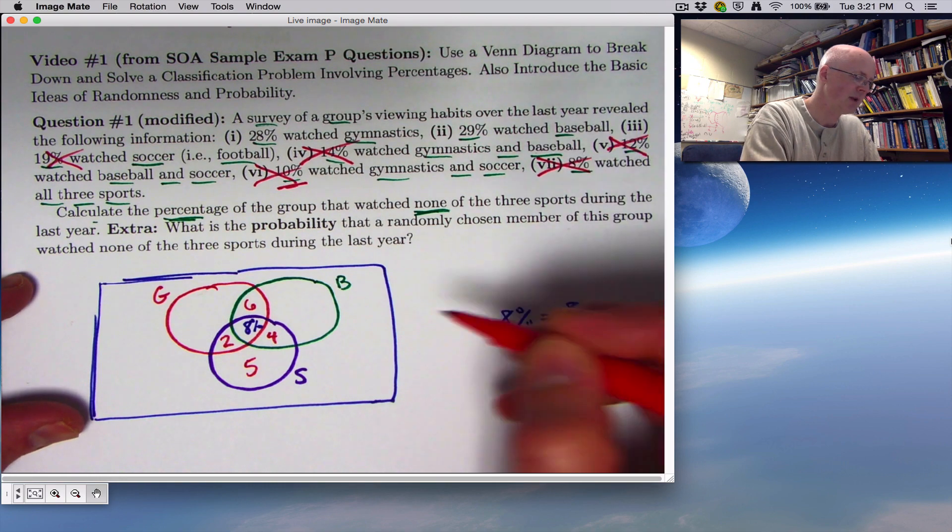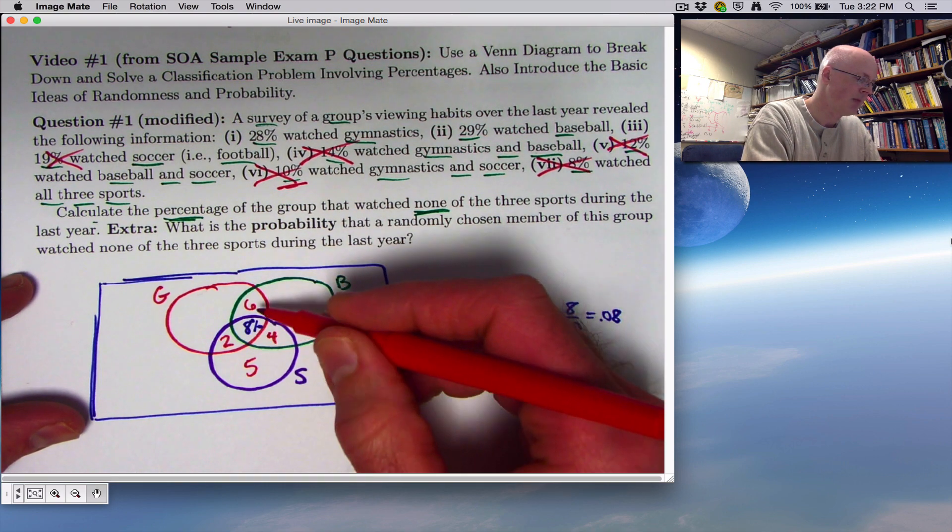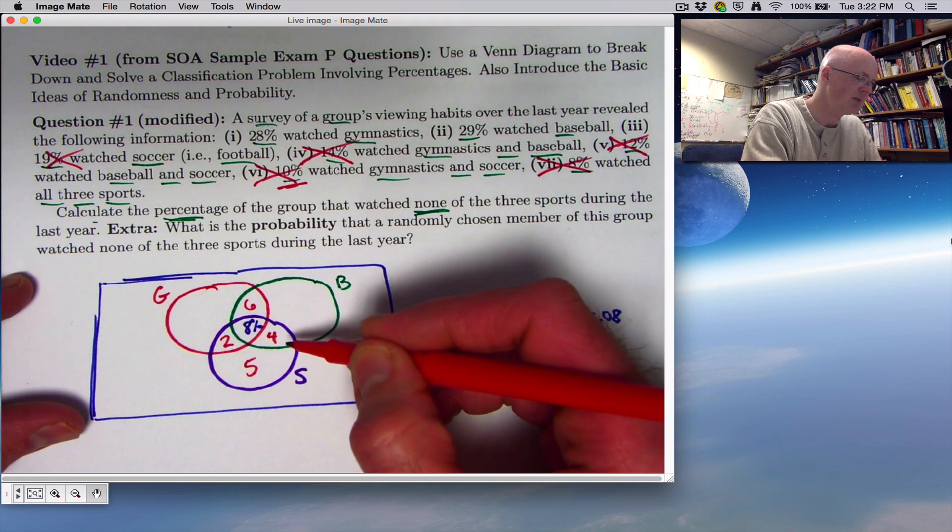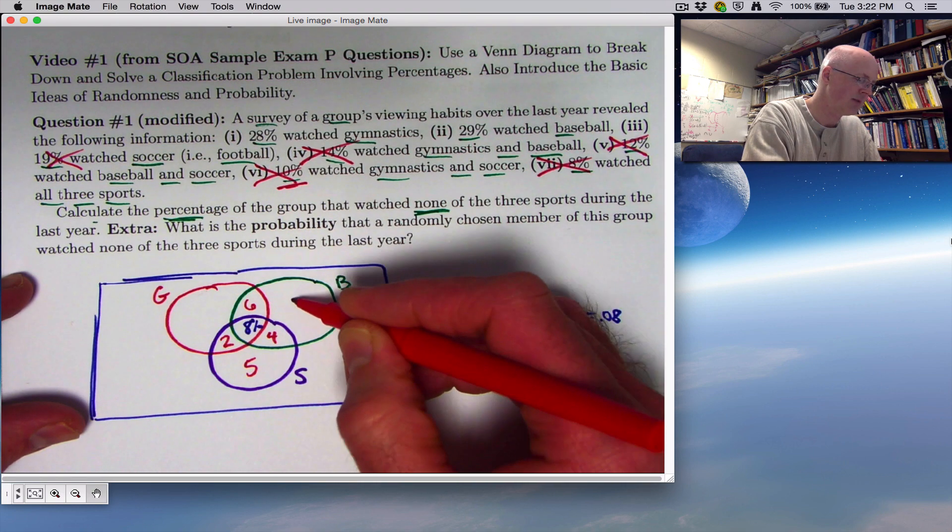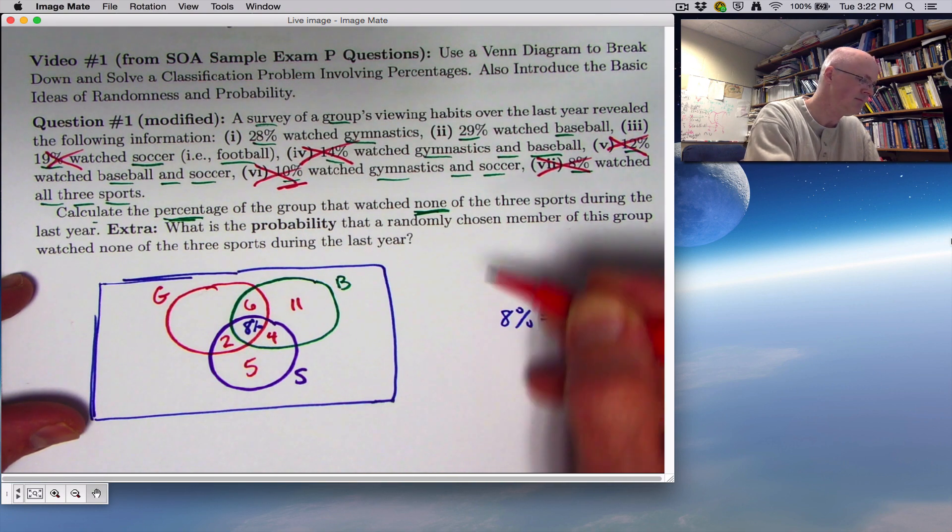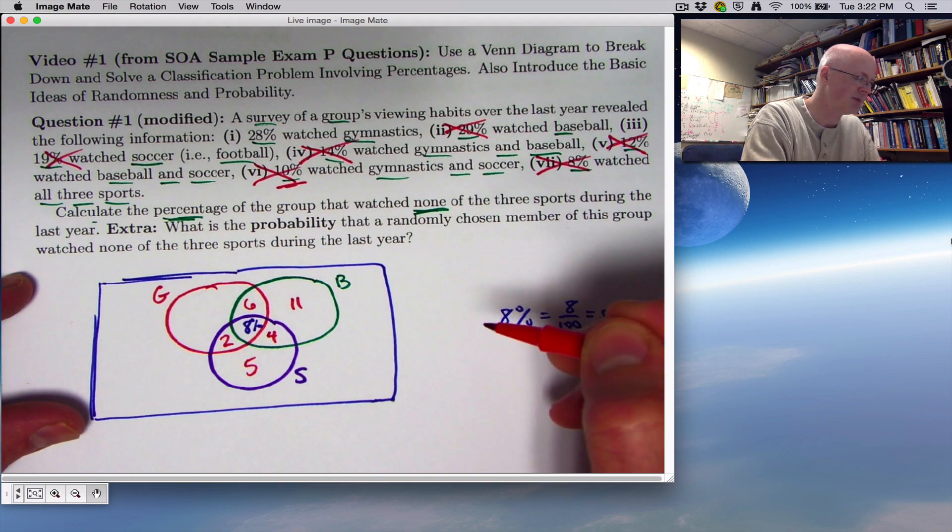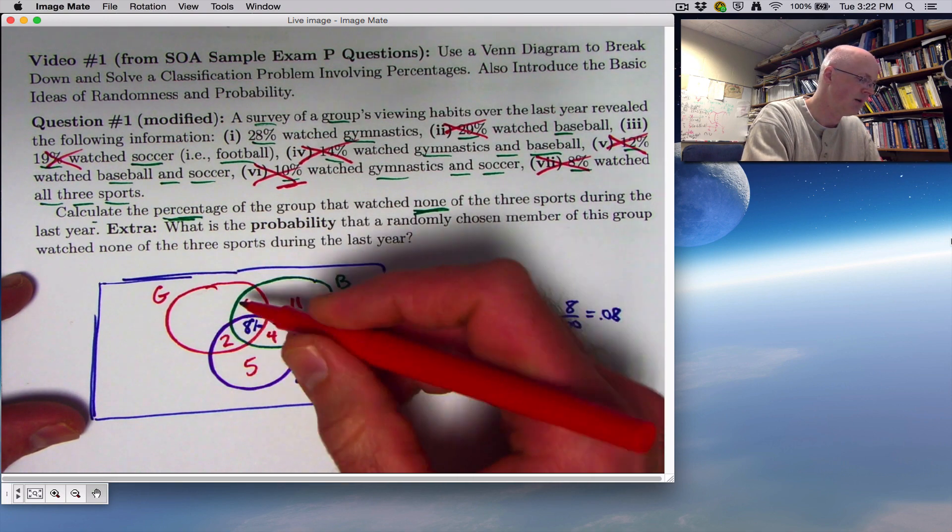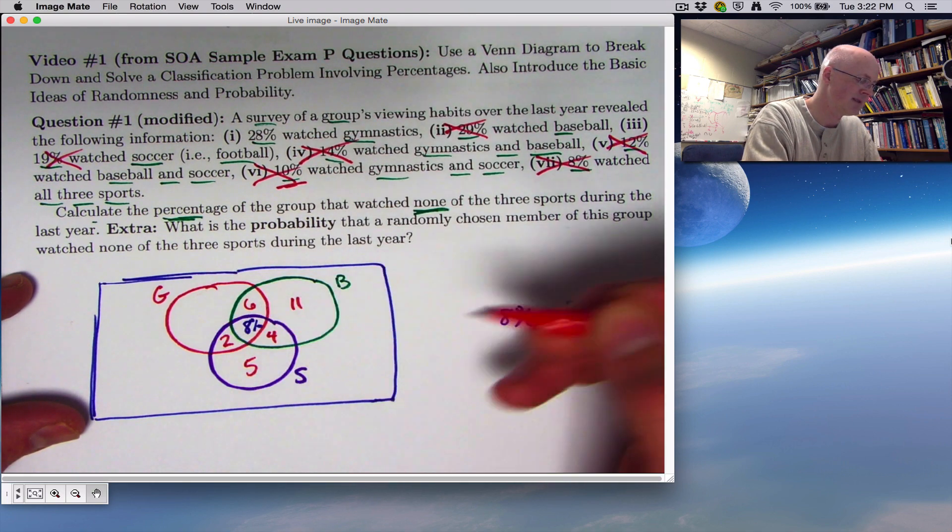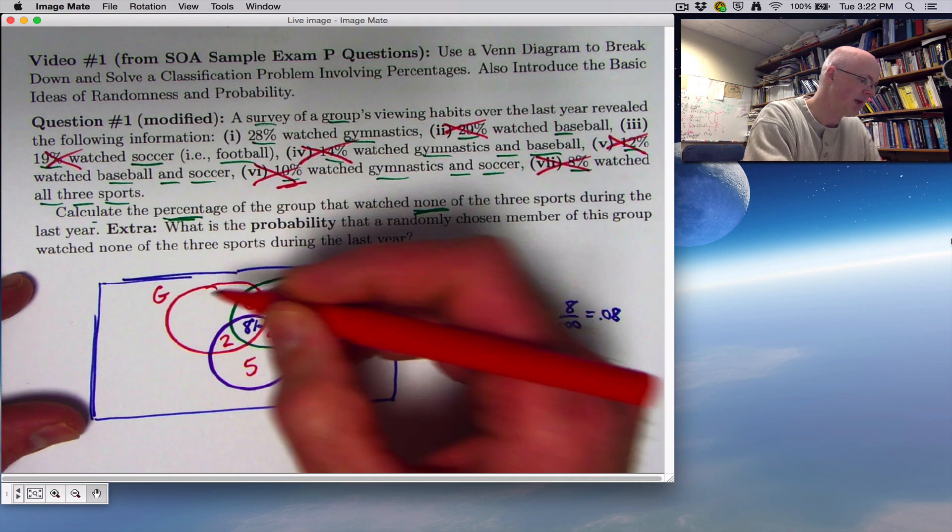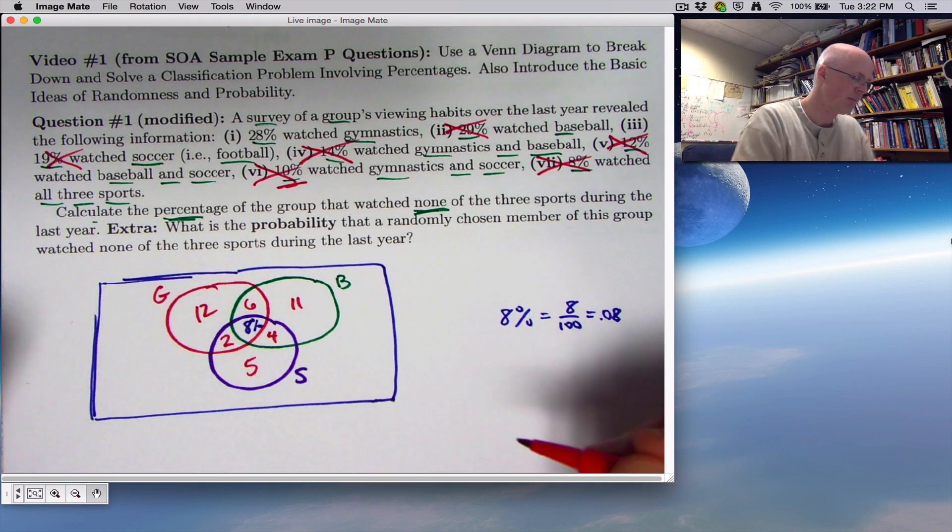2 plus 8 plus 4 is already 14. So we need a 5 here so that all four numbers add up to 19. Almost done. 29% watched baseball. They're in the green. We've already taken care of 18% of them. So we have 11% left over. Finally, 28% watched gymnastics. They are in the red circle. We've already accounted for 2 plus 8 plus 6 of them, 16%. So we have 12% left over.